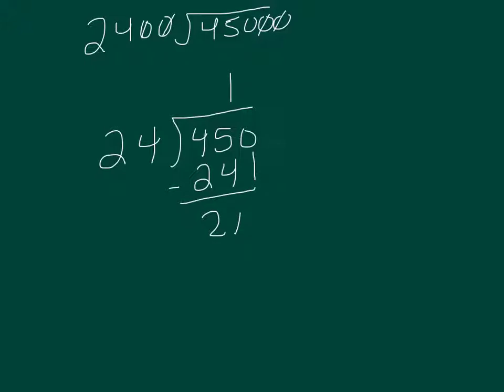So now I bring down the remaining zero, and I have to ask myself, how many times can 24 go into 210? I'm going to guess I can go off to the side. I'm going to try 9 times and see if I get close or not. 9 times 4 is 36. 9 times 2 is 18. 9 times 2 is 21. Ugh, that's too big by 6.